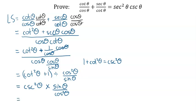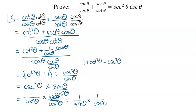Almost there. Cosecant squared is one over sine squared theta. Multiplying by sine theta over cosine squared theta, the sine cancels with one of those sines, leaving one over sine theta times one over cosine squared theta. Looking at the right side, secant is one over cosine, so that's one over cosine squared theta, and cosecant is one over sine theta. Those two things are the same — the order of multiplication doesn't matter — so we have proven that identity.